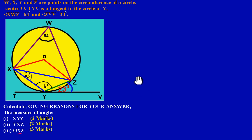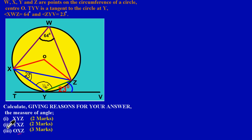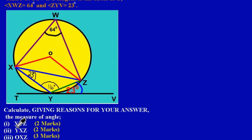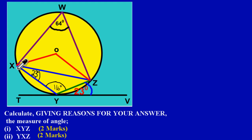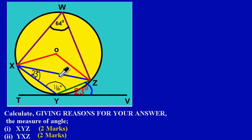In the previous video we looked at solving Part 1 and Part 2, where we found angle XYZ to be 116 degrees. The theorem used was that opposite interior angles in a cyclic quadrilateral are supplementary — meaning 116 plus 64 equals 180 degrees.